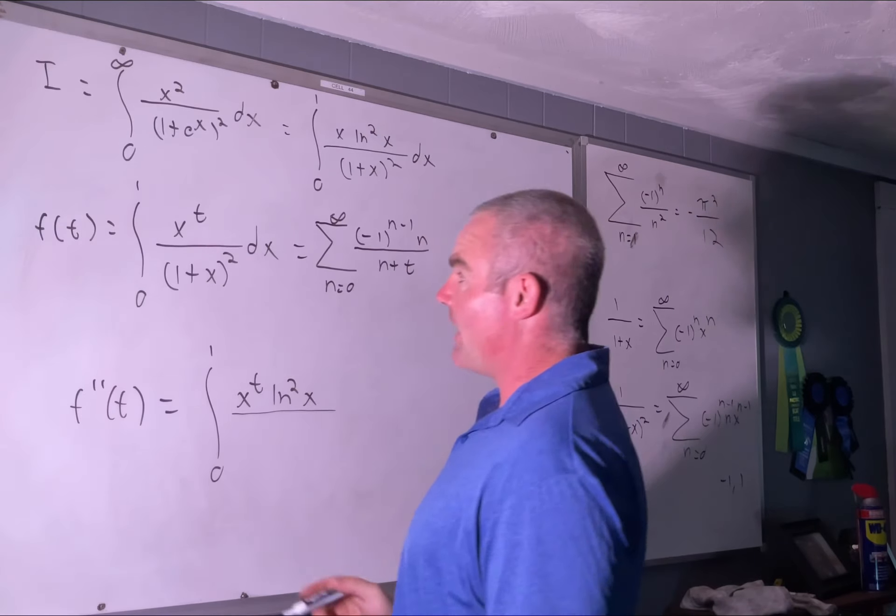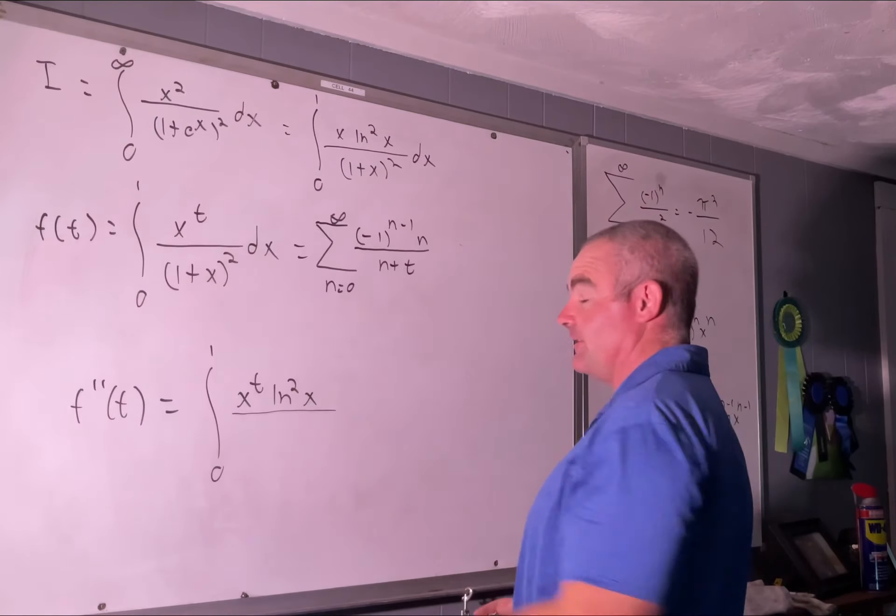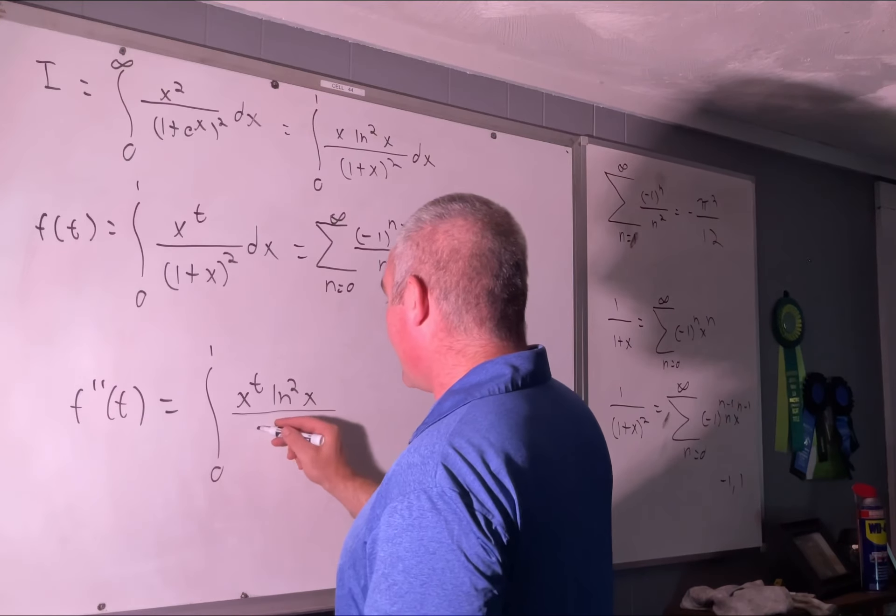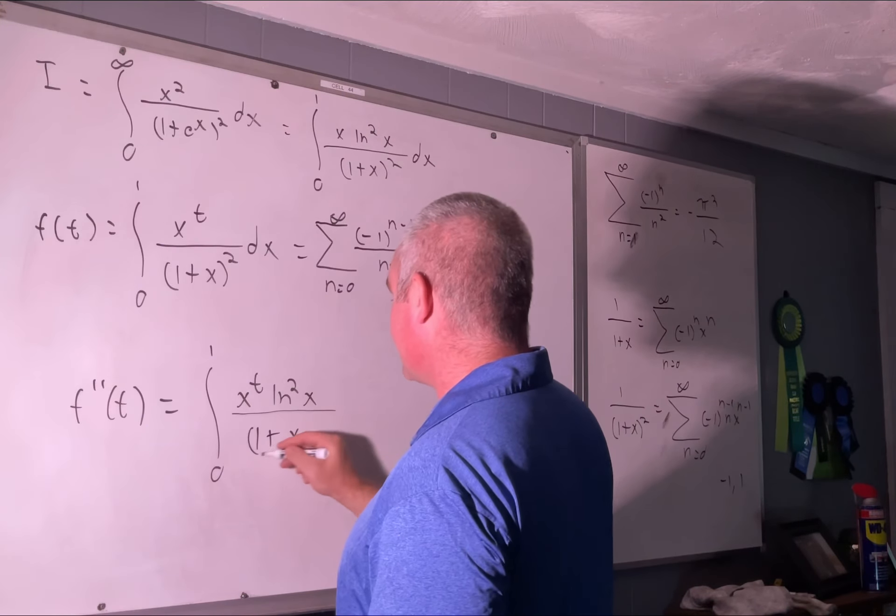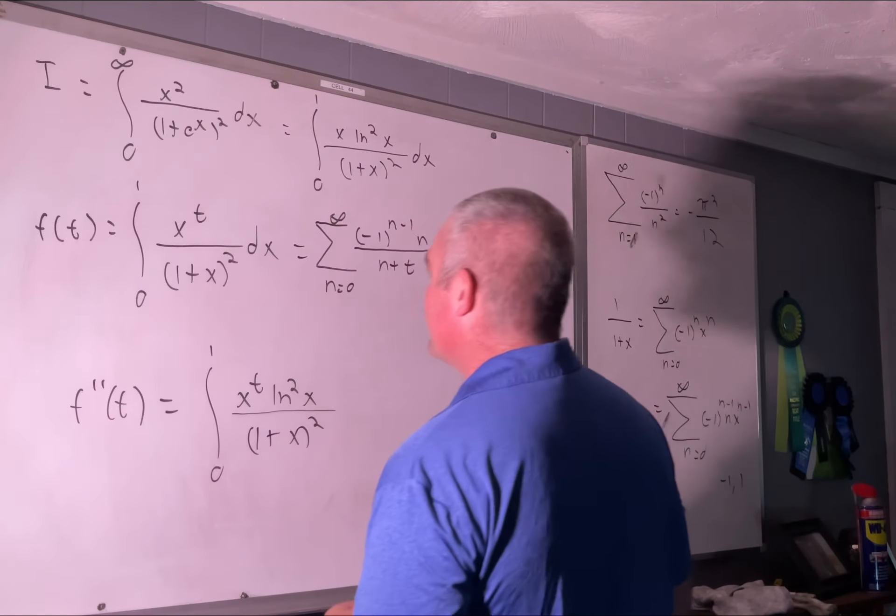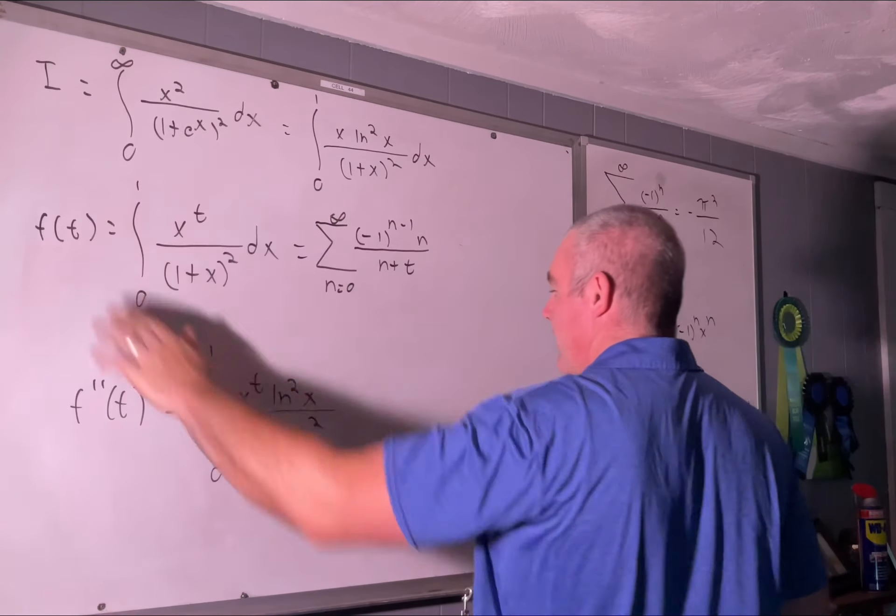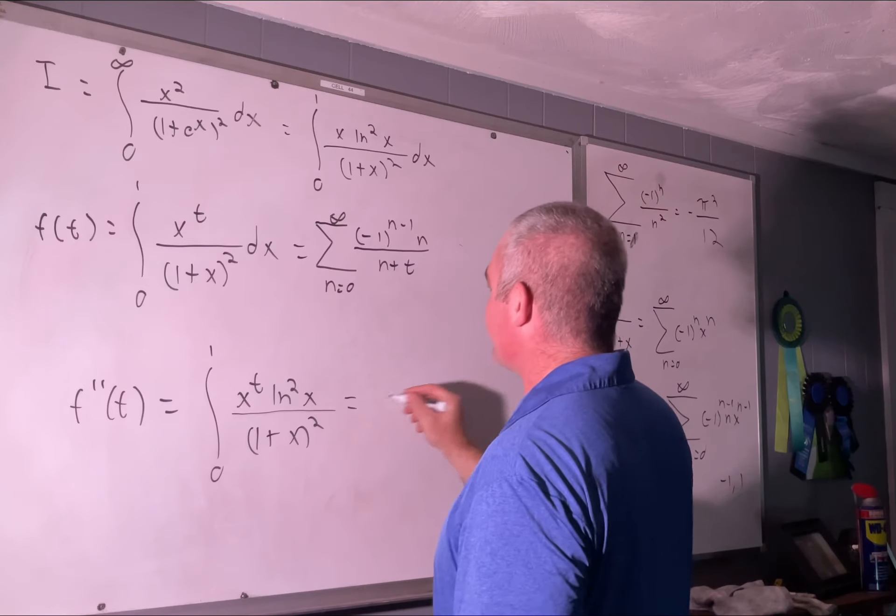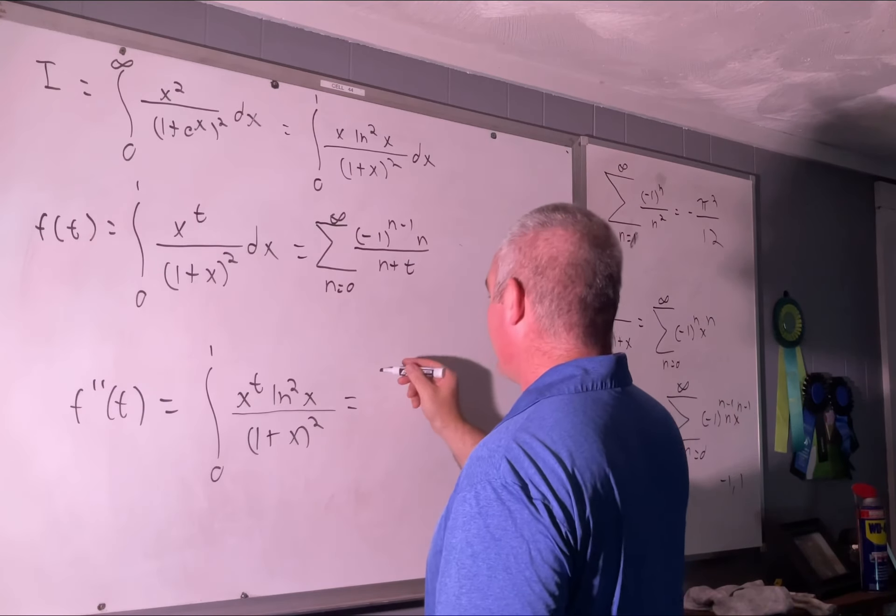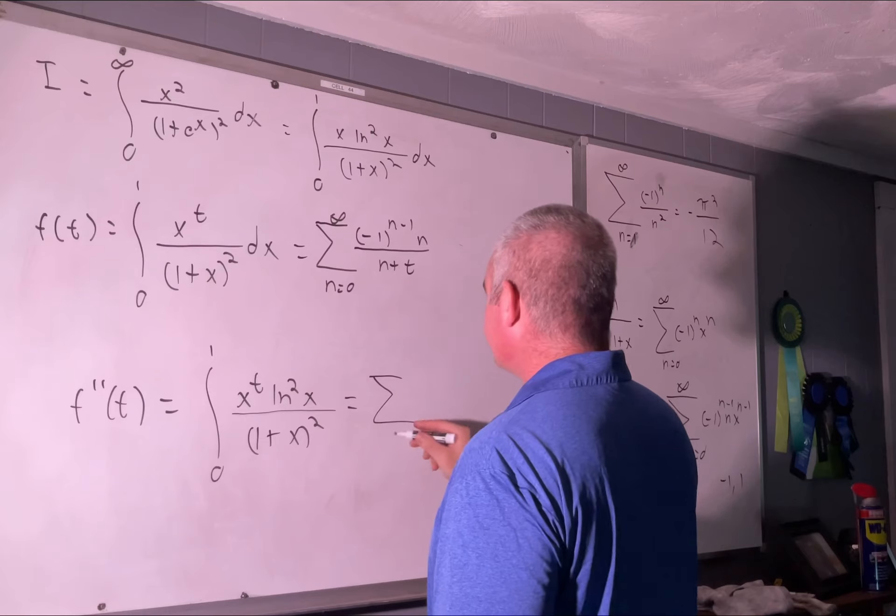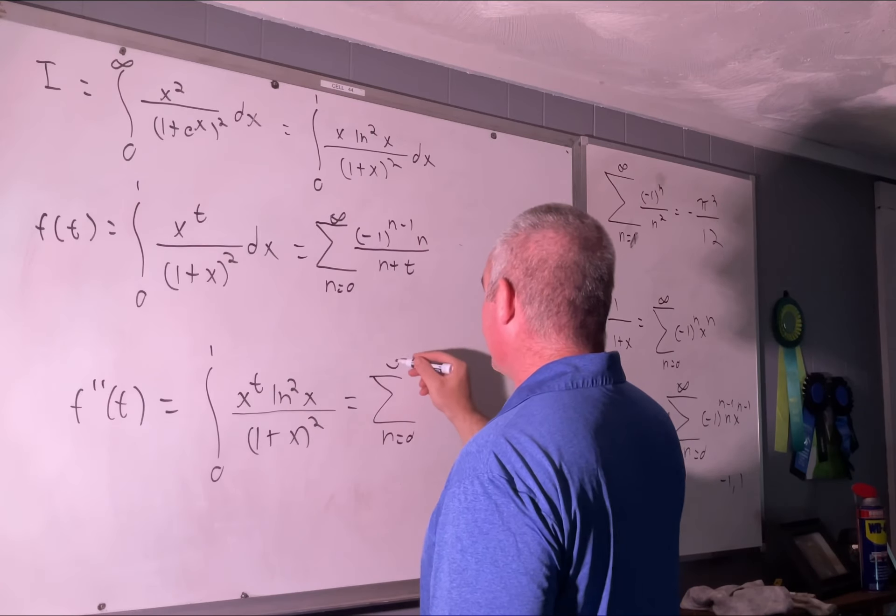And that was my motivation for that reparameterization by the way. So that's the two derivatives with respect to t of this part. Now we'll take two derivatives with respect to t of this part, and they should be equivalent. Sum from n=0 to infinity.